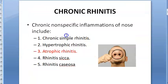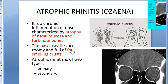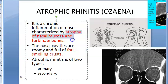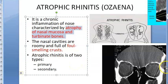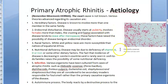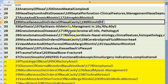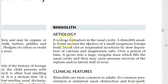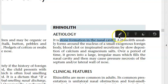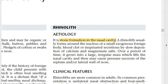In atrophic rhinitis the nasal cavity will be very airy and wide, with foul-smelling crusts, but the patient is unaware — this is called merciful anosmia. It is caused by Klebsiella ozaenae and other causes. Rhinolith is stone formation in the nasal cavity, treated by removal under general anaesthesia.